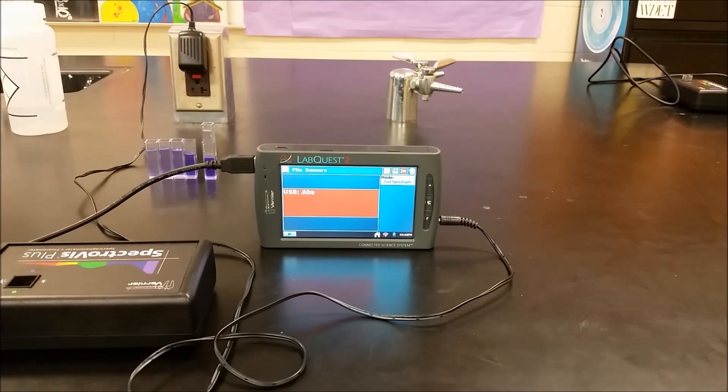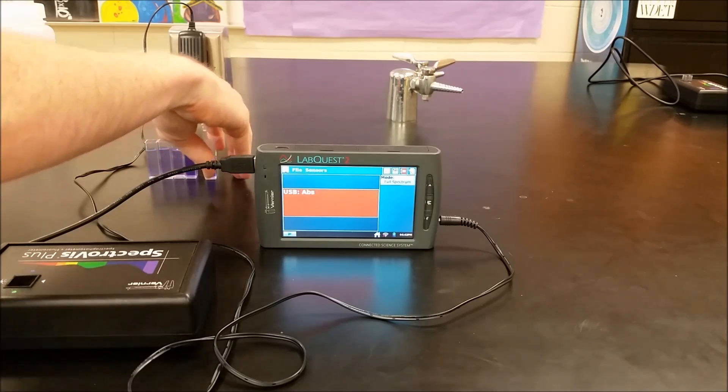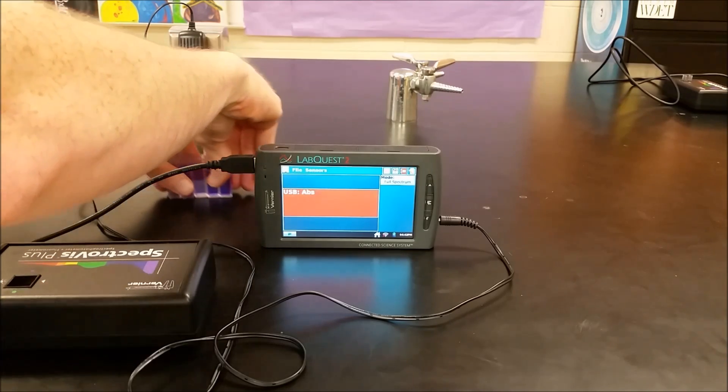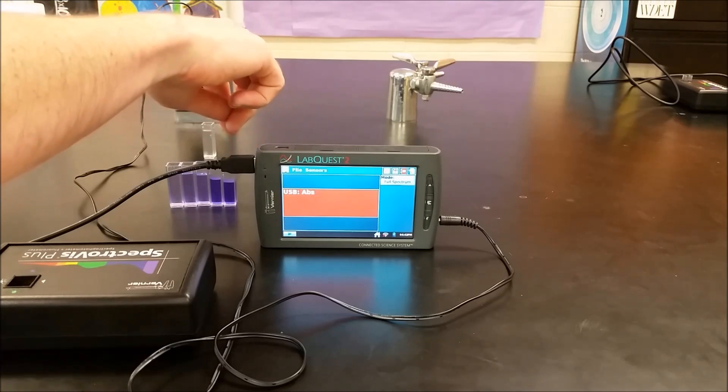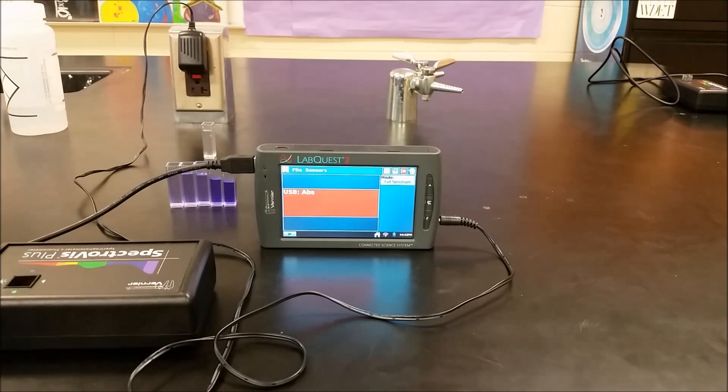Before we start our experiment with kinetics, we're going to first construct a Beer's Law calibration curve for crystal violet. So I've prepared some standard solutions over here. We go from 25 micromolar to 20, 15, 10, and 5.